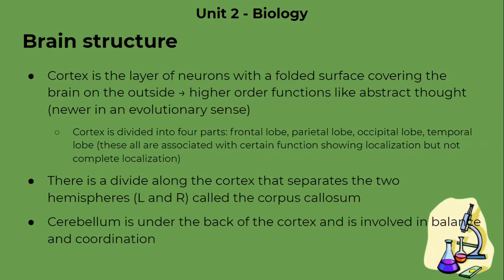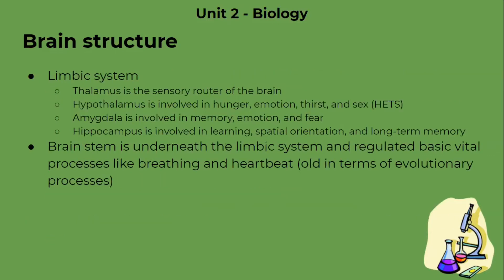Moving on — the cerebellum, called the little brain, sits under the cortex and is mainly involved in balance and coordination. Now we're into the limbic system, which is in the center middle portion of the brain. It contains four elements. A good mnemonic to remember this is HATH: hypothalamus, amygdala, thalamus, and hippocampus.